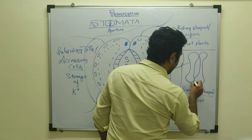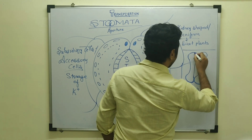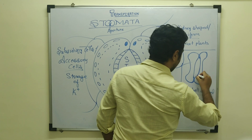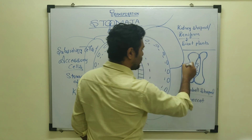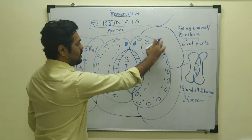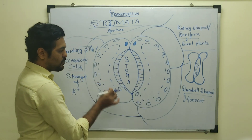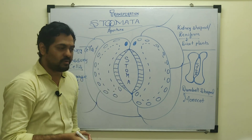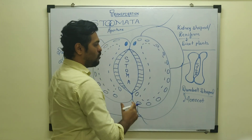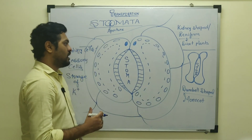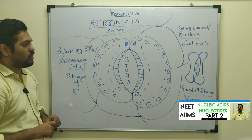In the dumbbell-shaped guard cells of monocots, the expanded ends are mainly thick-walled, while the middle portion is comparatively thin-walled, and the aperture — the stoma — is located in the middle. These guard cells are living nucleated cells having a large central vacuole, peripheral cytoplasm, and chloroplast presence. The inner cell wall has radial cellulosic microfibres making it thick and elastic, while the outer cell wall is comparatively thin and more elastic. The neighboring epidermal cells are the subsidiary or accessory cells with a role in potassium storage.